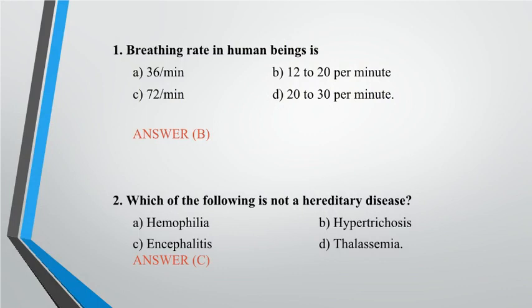Question 1: Breathing rate in human beings is — A. 36 per minute, B. 12 to 20 per minute, C. 72 per minute, D. 20 to 30 per minute. Answer: B.